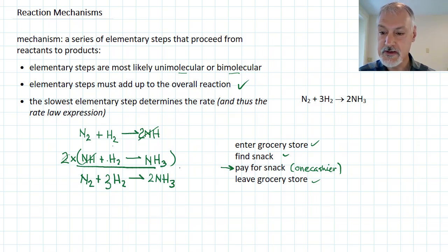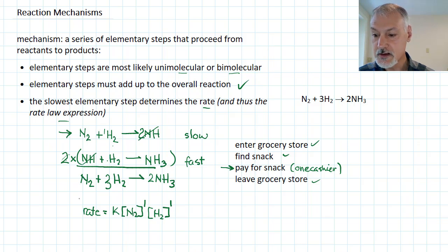Similarly, in a mechanism, one of the steps is usually the slowest. If I said that this step here was the slowest, it required the greatest activation energy, and these other steps were considered to be fast, then what would happen is this step would determine the rate and the rate law expression. So the rate law for this proposed mechanism would say it's the concentration of nitrogen, one of them, so the exponent here would be one, colliding with one hydrogen. This would be a rate law expression consistent with this one being the slowest step. So a mechanism needs to fulfill these three requirements.